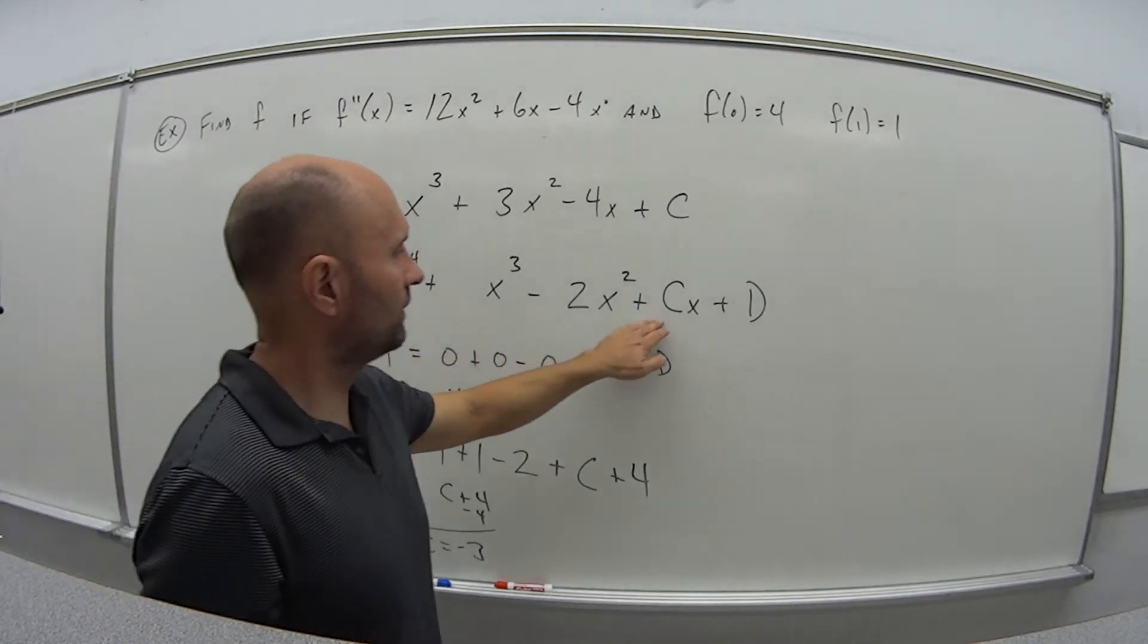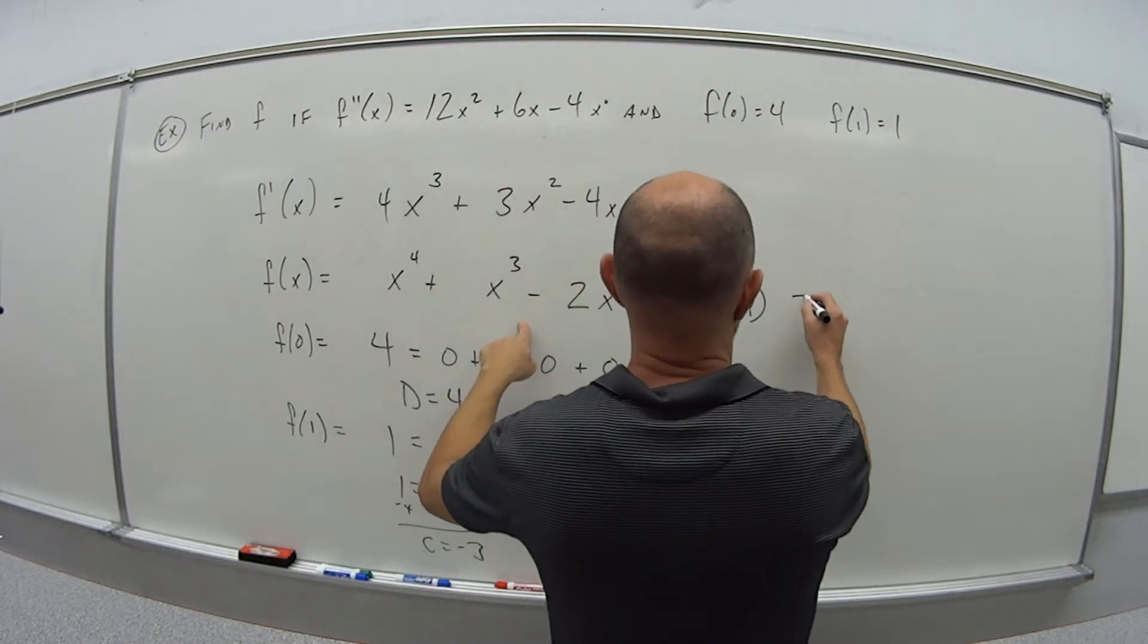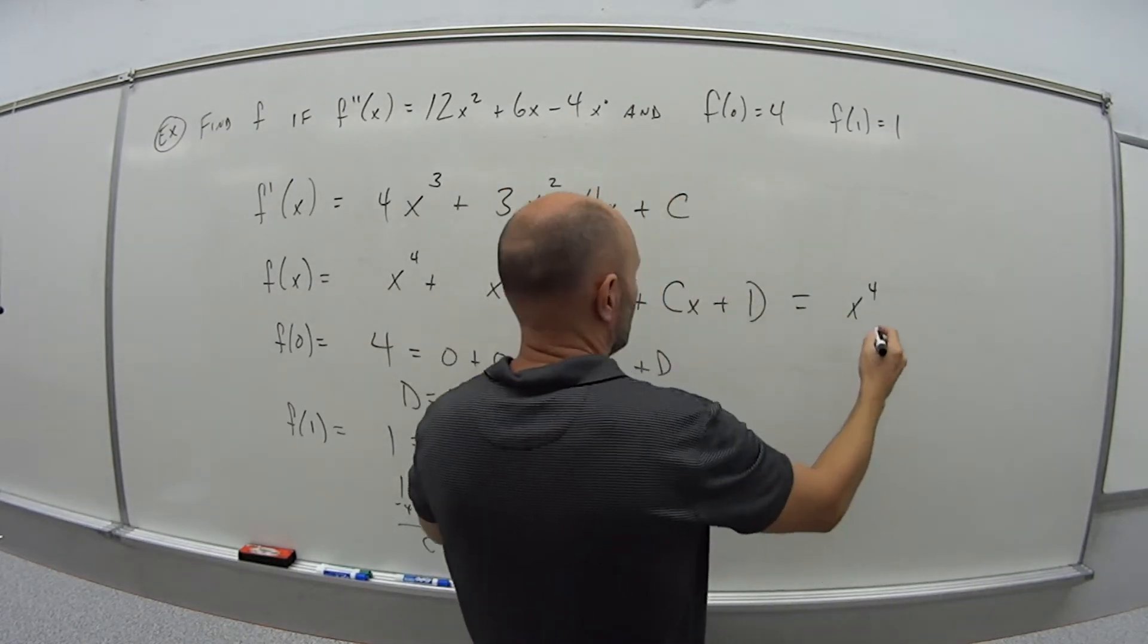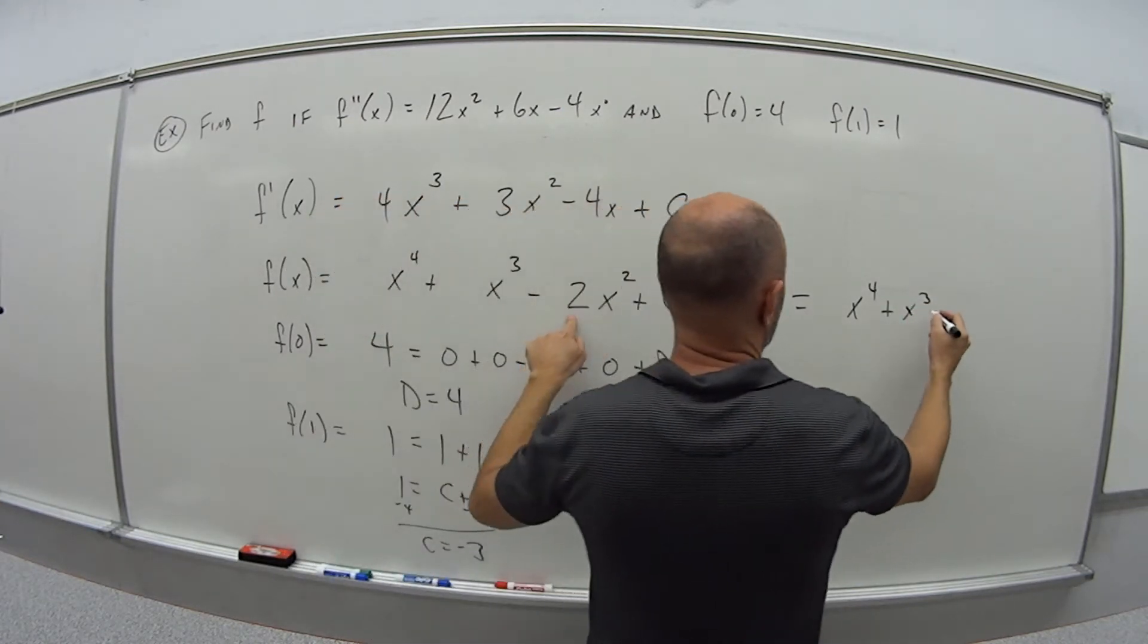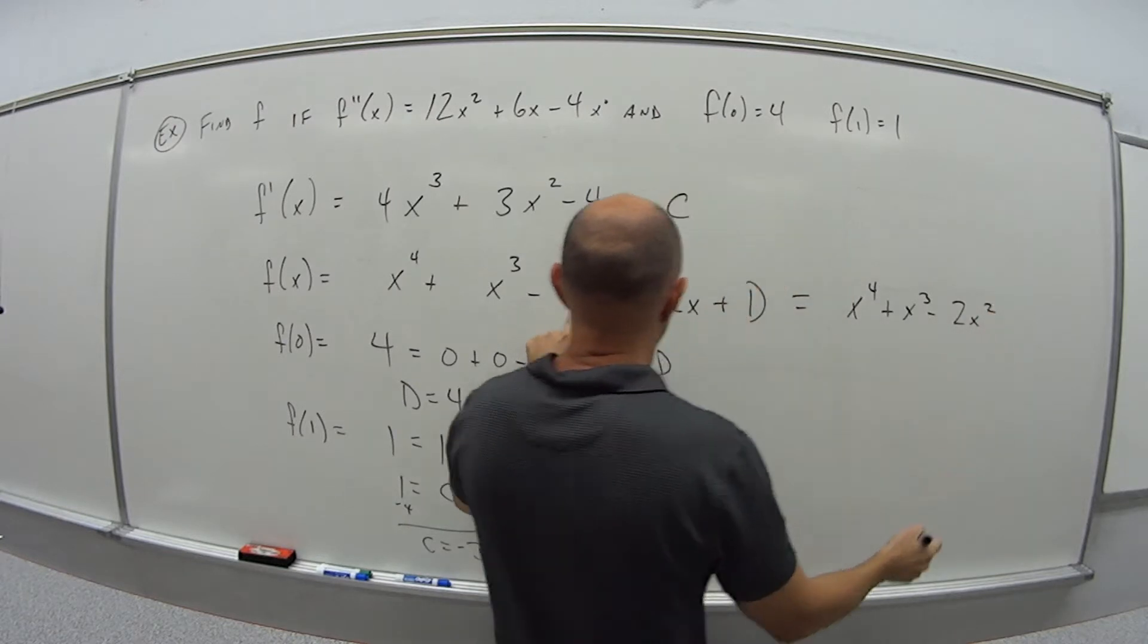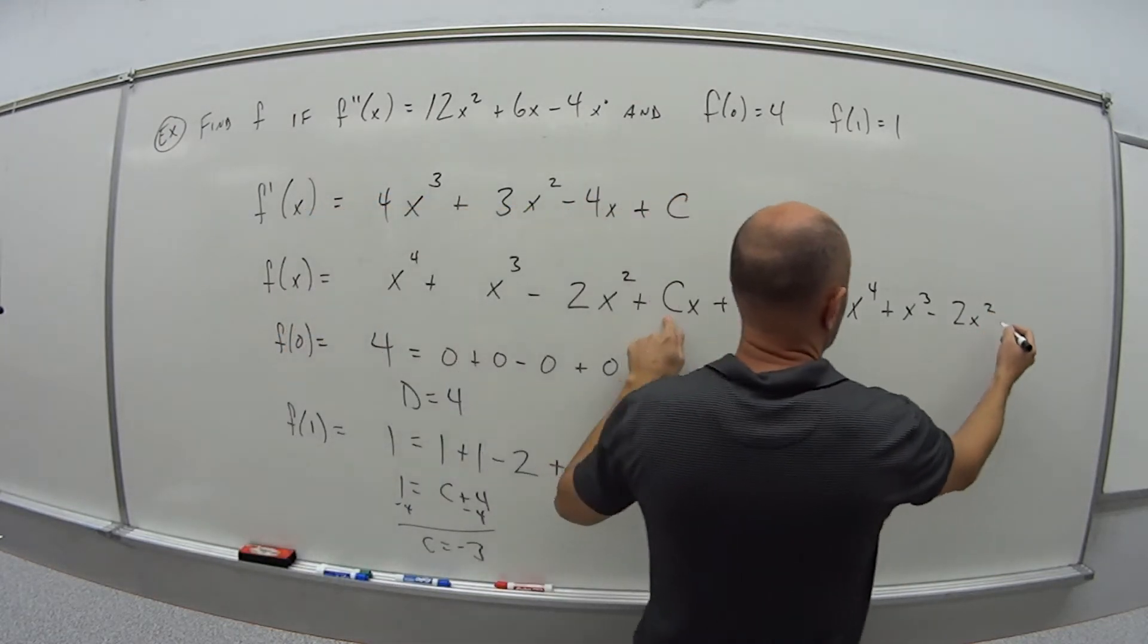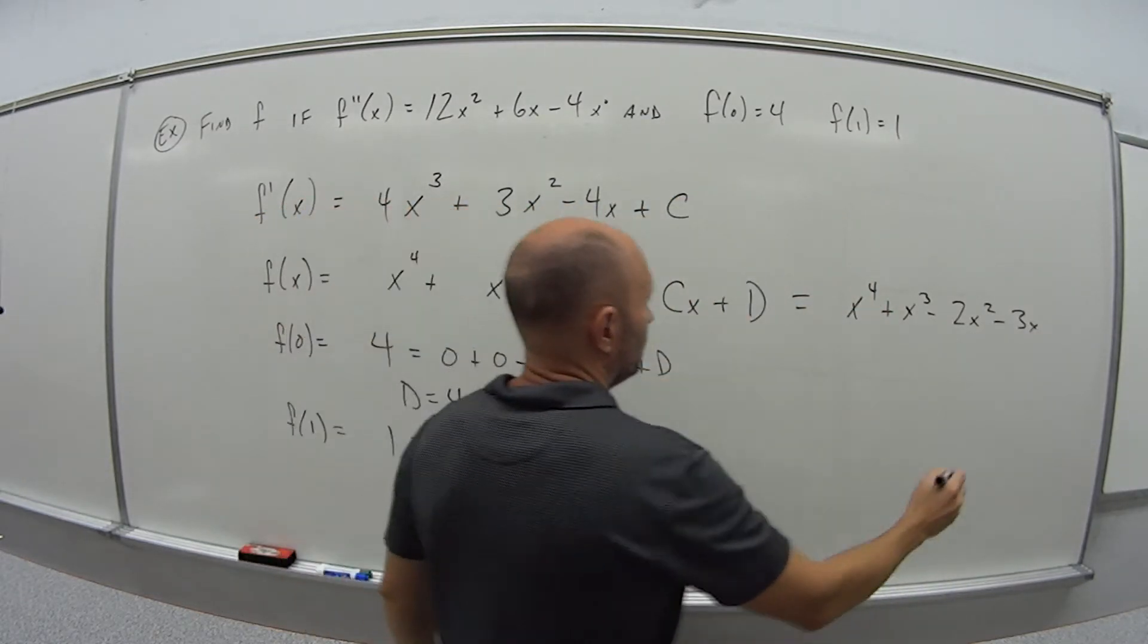So now we can go back to the main function, plug in our value for c and d. So that means f of x is x to the fourth, plus x to the third, minus 2x squared, plus c, which is negative 3, so minus 3x, plus d, so plus 4.